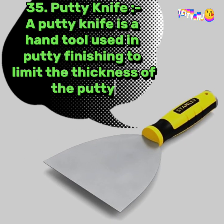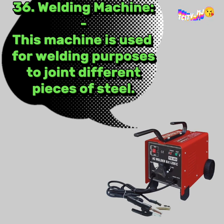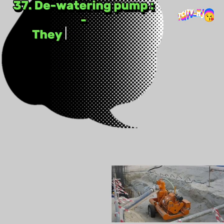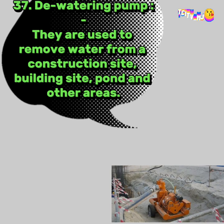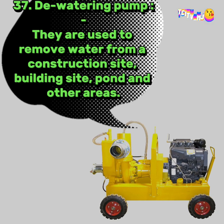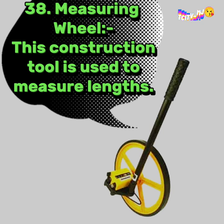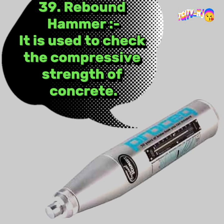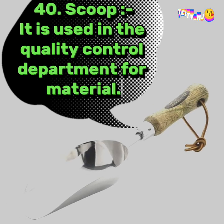35. Putty Knife: a putty knife is a hand tool used in putty finishing to limit the thickness of the putty. 36. Welding Machine: this machine is used for welding purposes to joint different pieces of steel. 37. Dewatering Pump: they are used to remove water from a construction site, building site, pond and other areas. 38. Measuring Wheel: this construction tool is used to measure lengths. 39. Rebound Hammer: it is used to check the compressive strength of concrete. 40. Scoop: it is used in the quality control department for material.